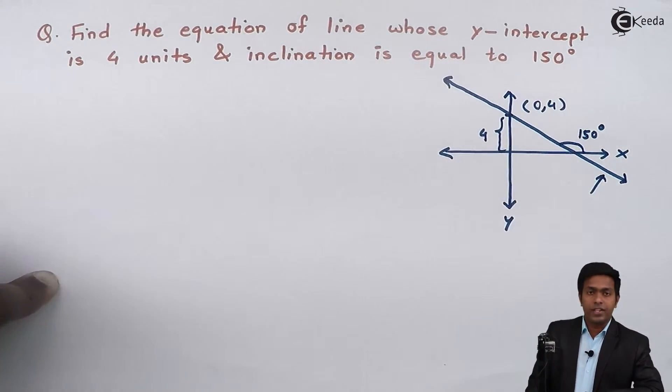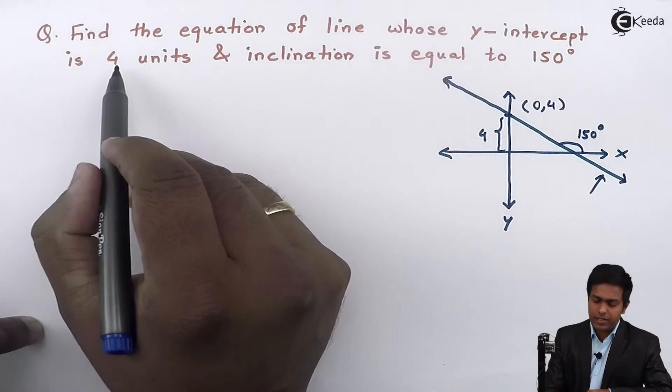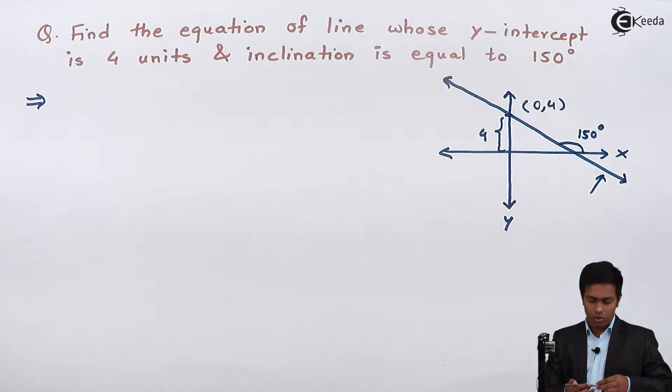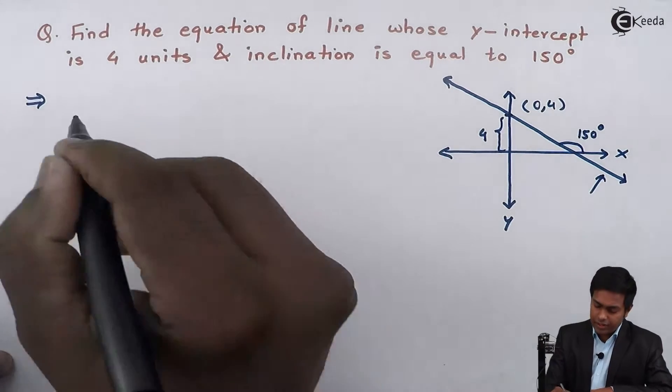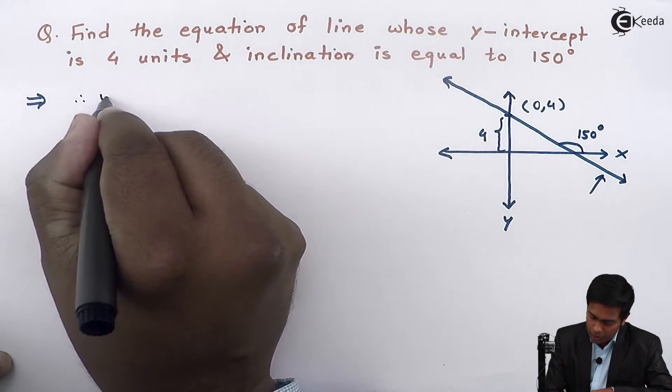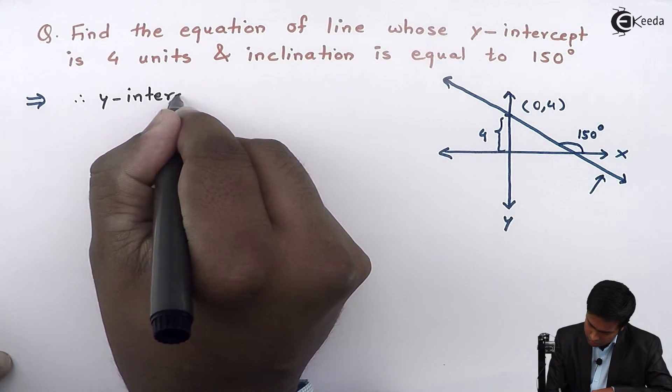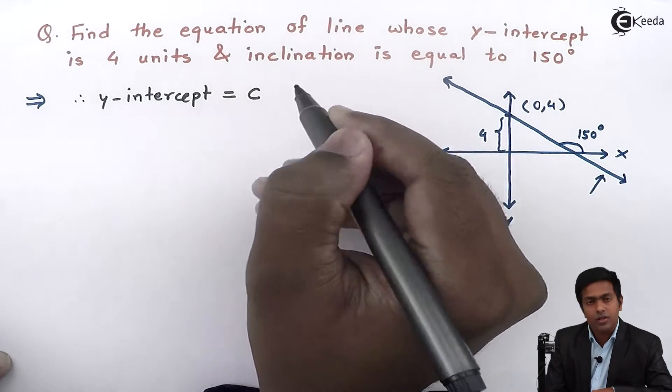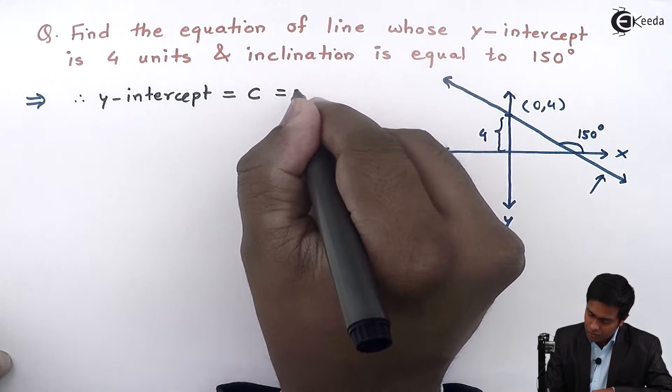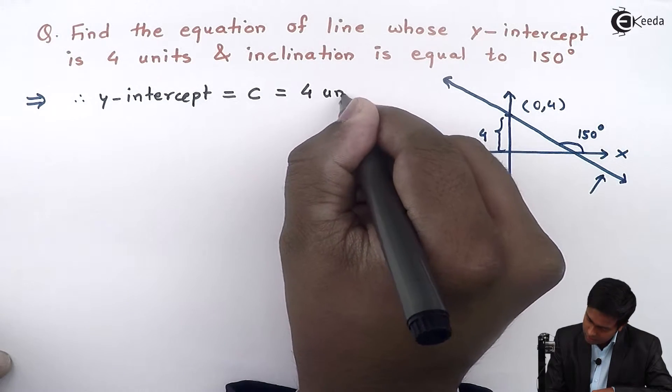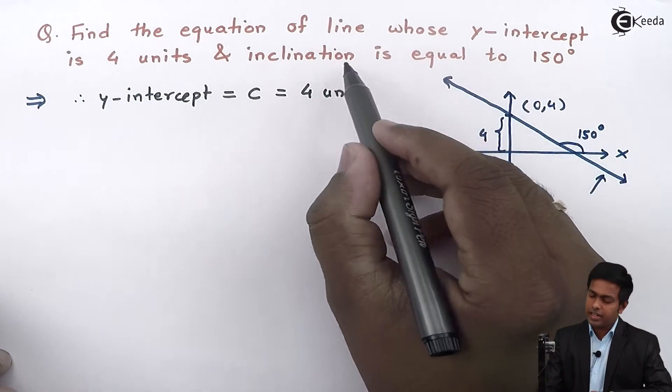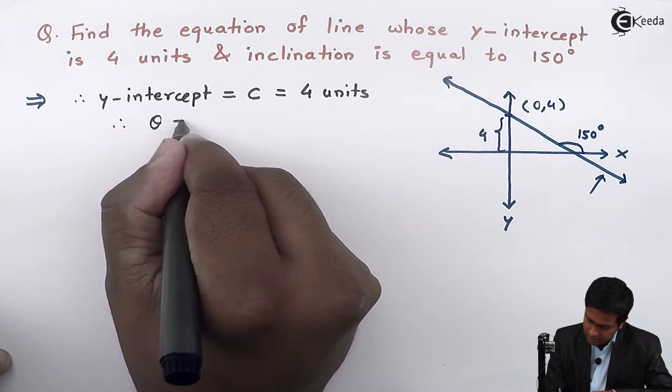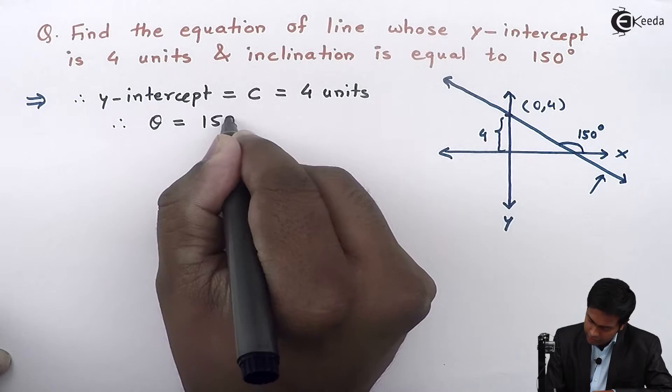So let's start with the solution. As y-intercept is given here, I'll start with it. So therefore y-intercept, we generally call y-intercept as c. So y-intercept is given as 4 units. Next, the inclination which we call as theta is given as 150 degrees.